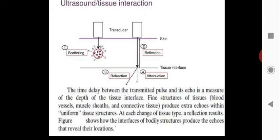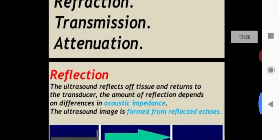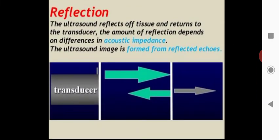Ultrasonic sound interacts with tissues through reflection, transmission, and attenuation. Reflection: ultrasound reflects off tissue and returns to the transducer. The amount of reflection depends on the difference in acoustic impedance. The acoustic image is formed from reflected echoes. The transducer both sends and receives signals. The clarity of the image depends on how well the signals are sent and received.